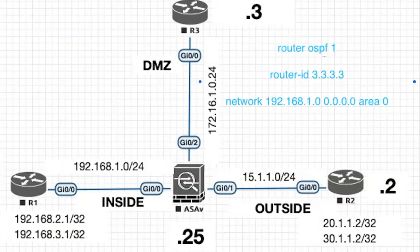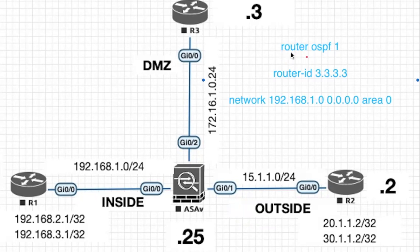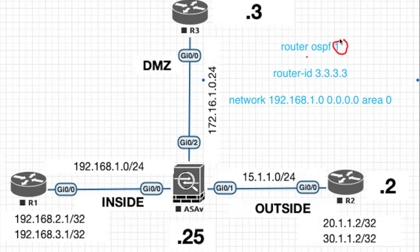To configure OSPF, we are going to use three commands. The first command is 'router ospf' followed by the process ID. The process ID ranges from 1 to 65535 — any positive integer number we can use. This command will enable the OSPF process. This process ID does not need to be identical across different routers.